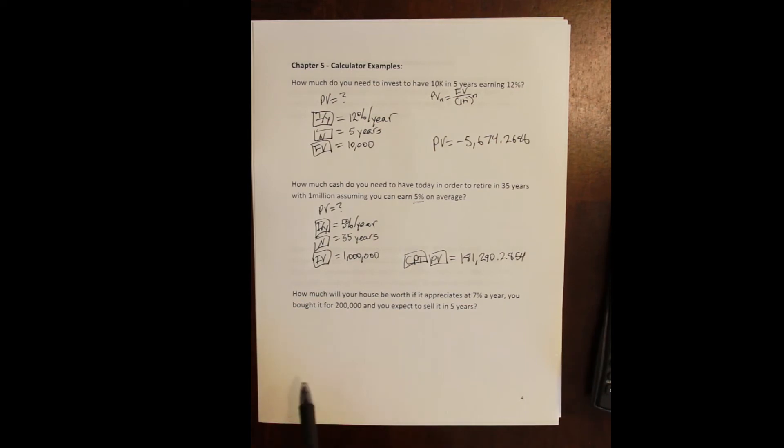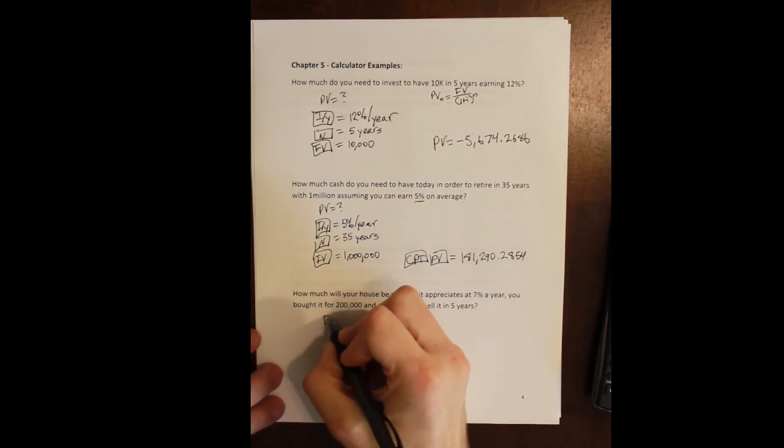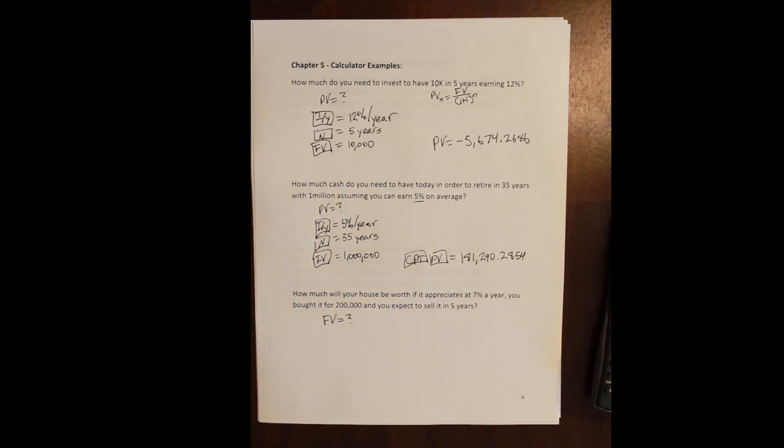Okay, the final problem here says: how much will your house be worth if it appreciates at 7% per year? You bought it for $200,000 and you hope or expect to sell it in five years from today. We want to know what kind of problem is this. The question is asking what something that we own is going to be worth in five years. We know what it's worth now because we just bought it for $200,000. We know that the price is going to increase or the value is going to increase 7% per year, and the question is what is it going to be worth five years from now given that information. That means we have a future value problem - what is the value of something in the future.